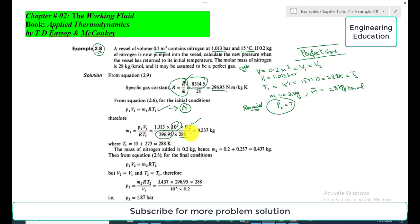T₁ is 288 K. When we simplify this, we get the value of mass M = 0.237 kg.